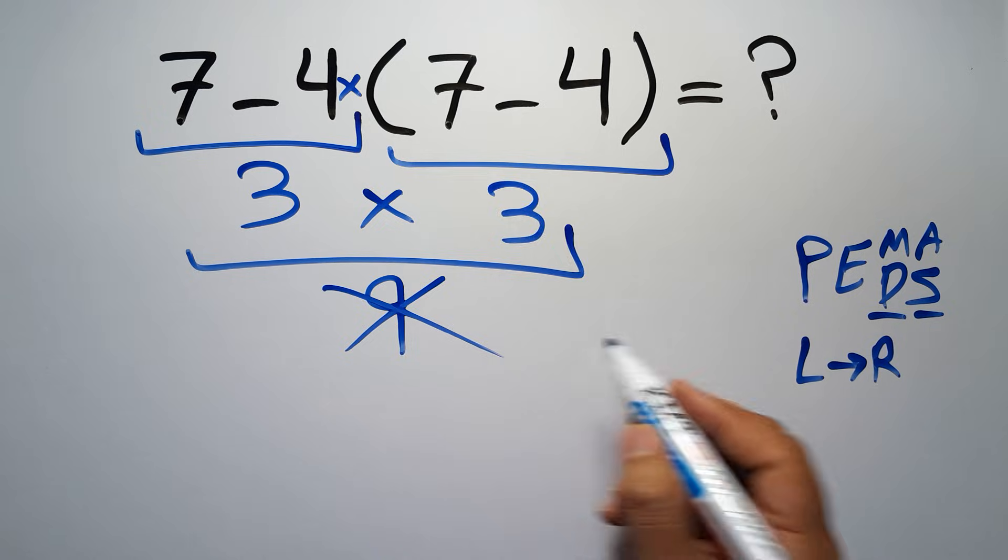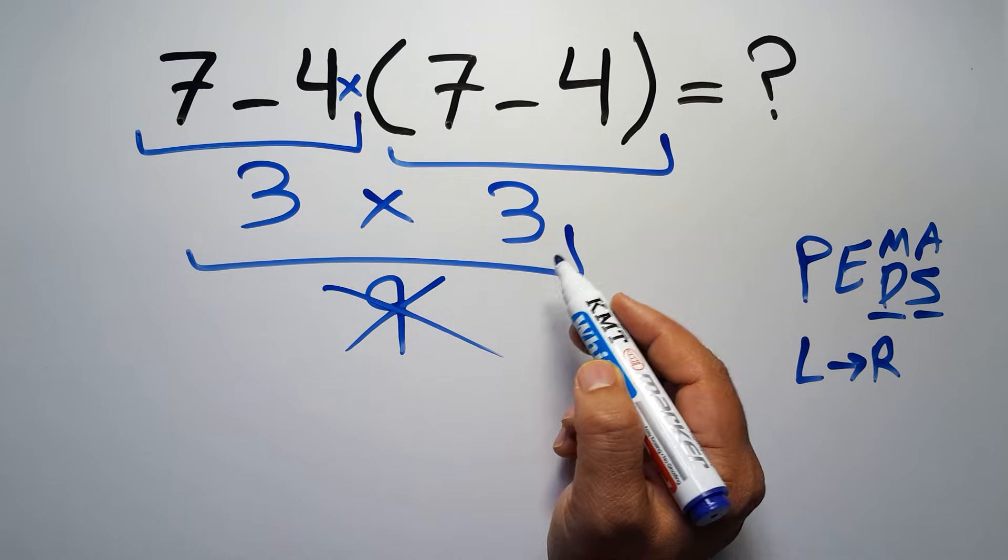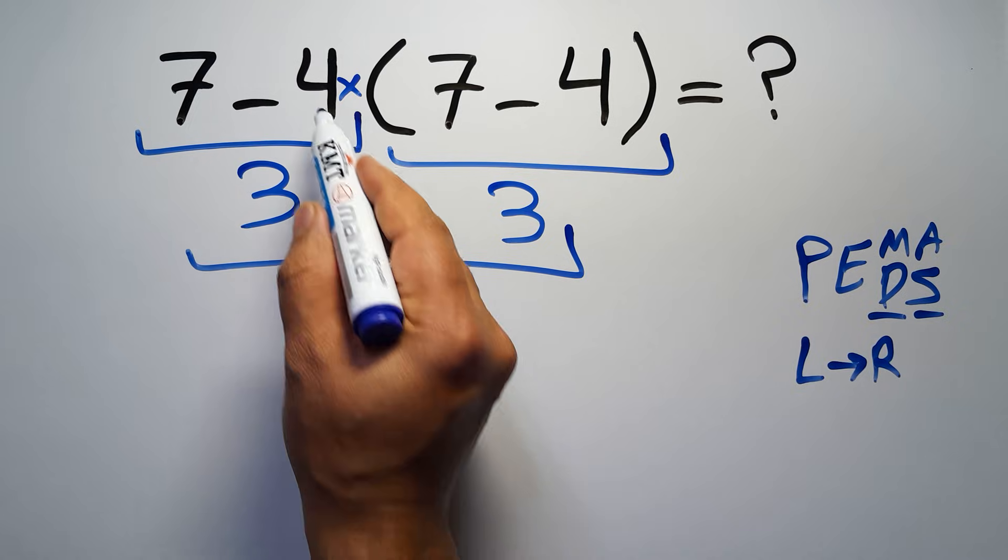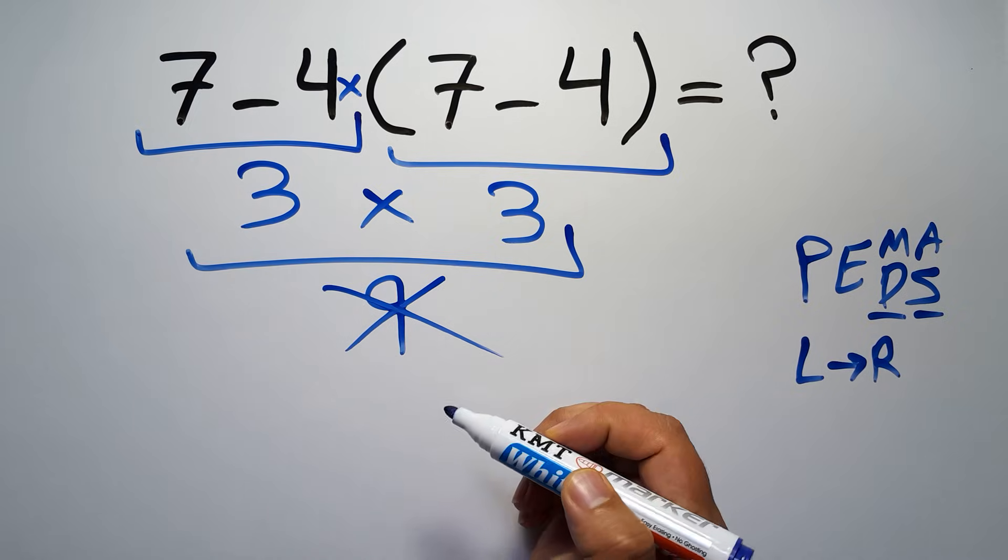So according to the PEMDAS, first we have to do this parentheses, then this multiplication, and finally this subtraction. If we do this subtraction before this multiplication or this parentheses, it is wrong.